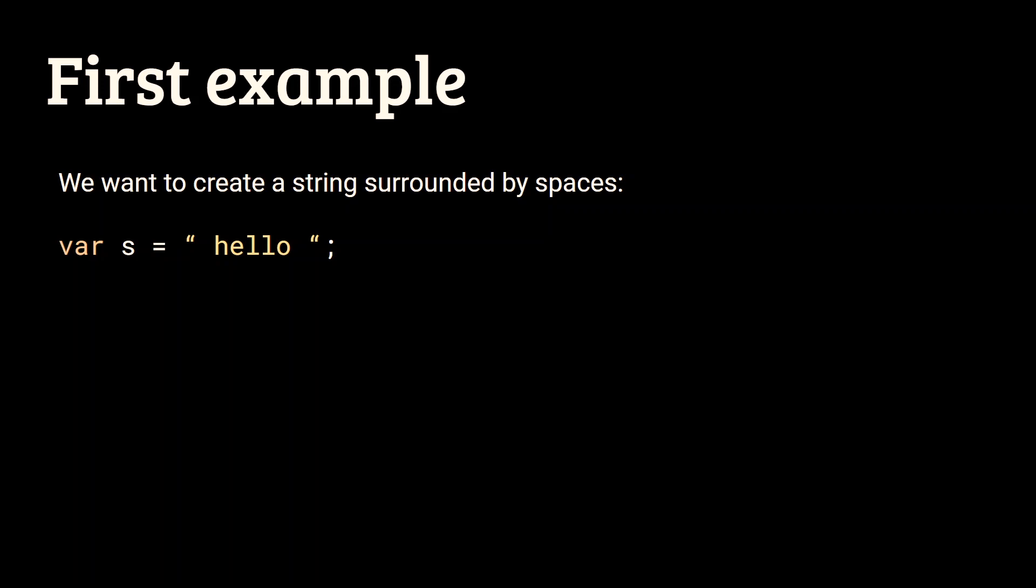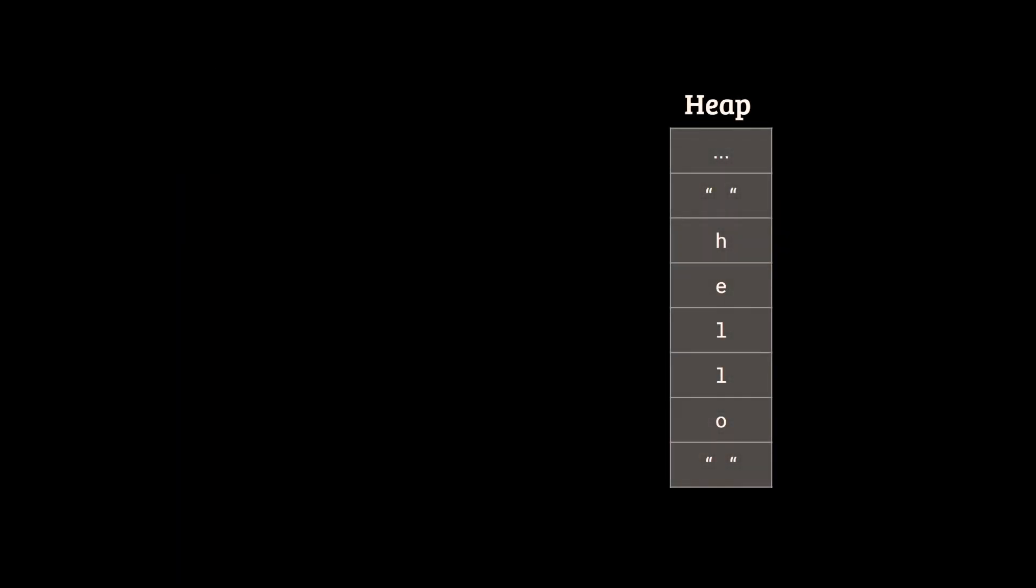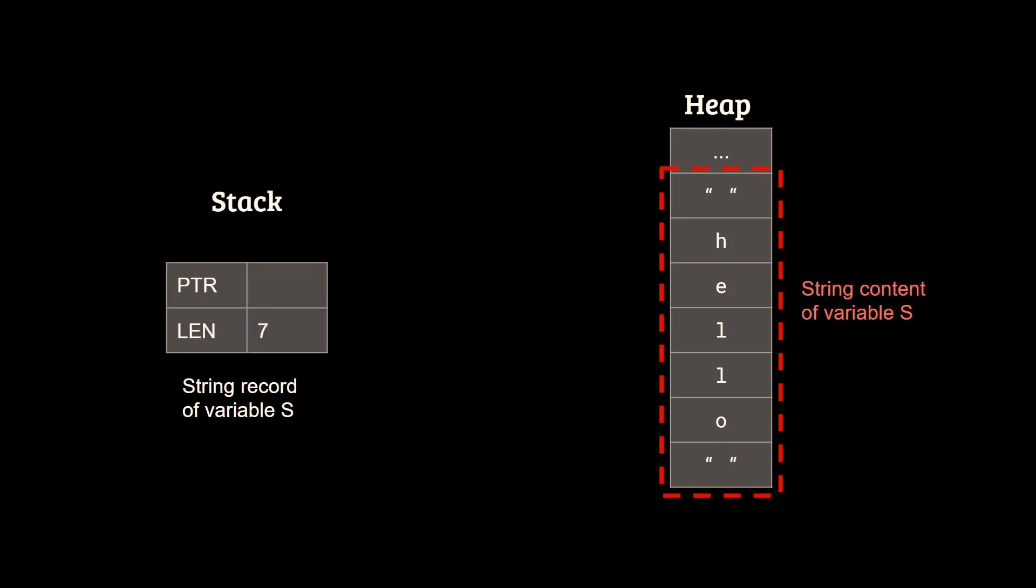From a memory standpoint, the situation is characterized by two memory entities. We have a memory region on the heap containing the actual string content, and then we have a string record on the stack containing the memory location of the first element on the heap, and generally its length.